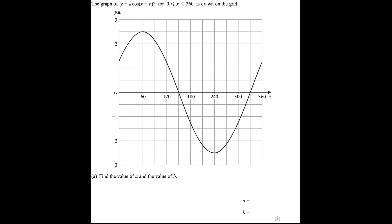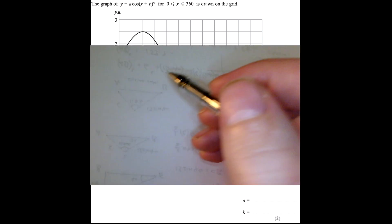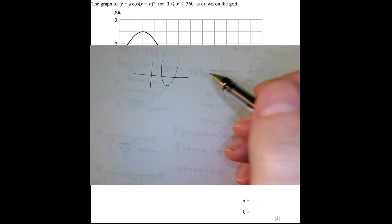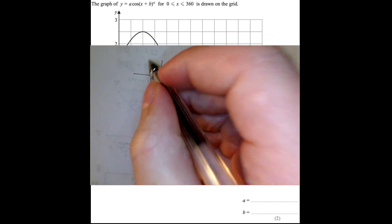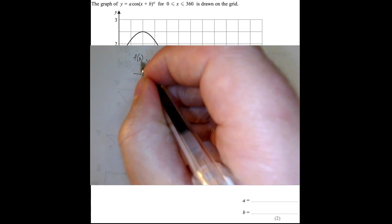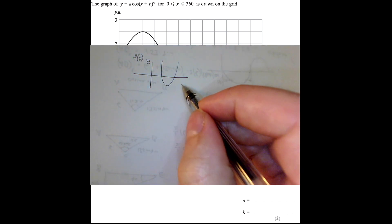OK, before we get going on this question, I thought I'd just do a very brief recap on the transformations. Basically, if you have numbers on the outside of a function, like we have here, a cosine x plus b, then that's an up-down change. Whereas if you have numbers like b inside brackets, then that's a left-right change.